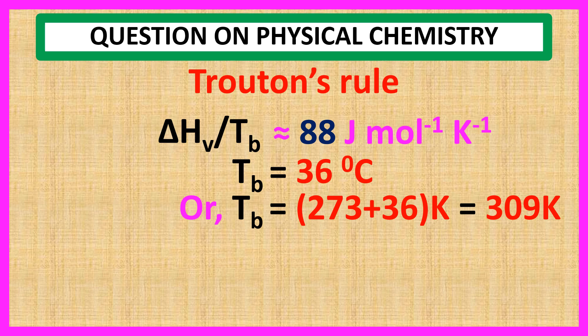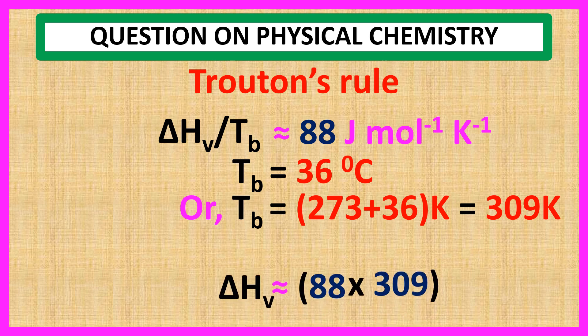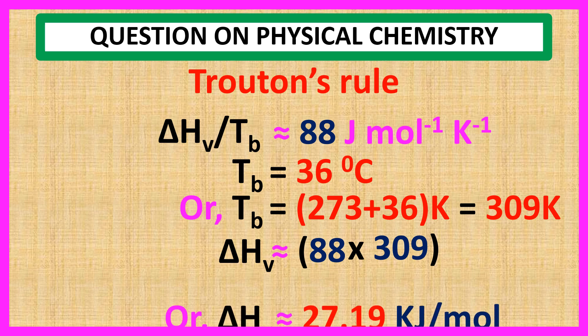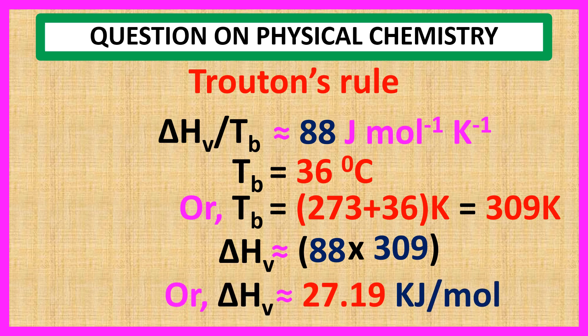Now we put the value of Tb into our previous equation: ΔHv ≈ 88 × 309, which gives ΔHv ≈ 27.19 kilojoule per mole.